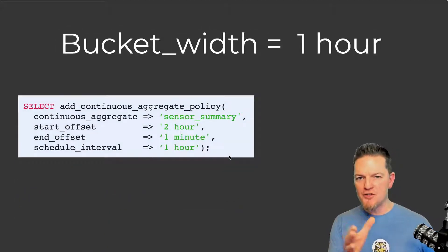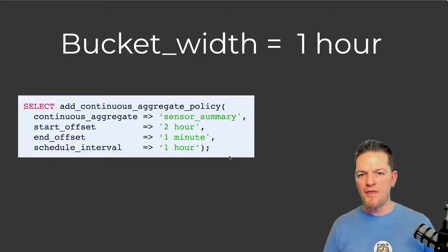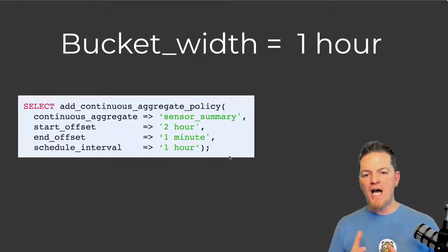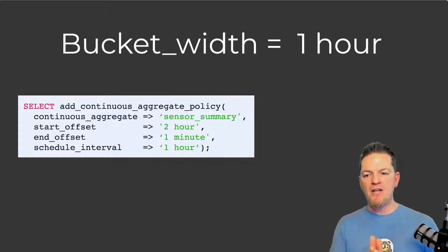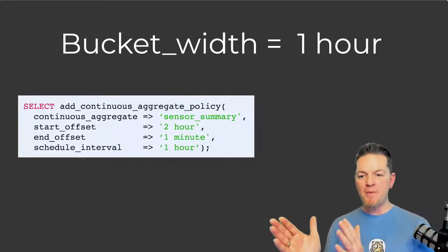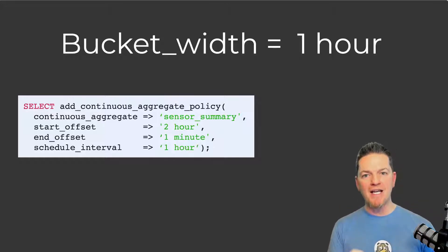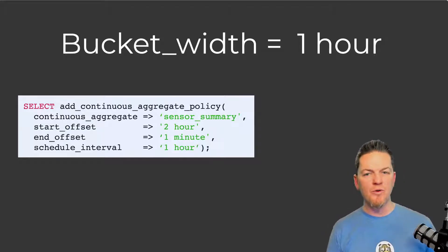Instead, our recommendation is that you should always have an offset of at least two bucket widths. So if you have a one-hour time bucket, we highly recommend a two-hour start offset. Your end offset needs to give us at least two full bucket widths so that no matter how often or where that window slides, you're going to aggregate at least one full bucket of time.